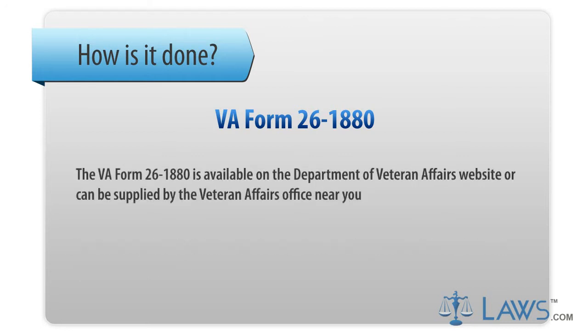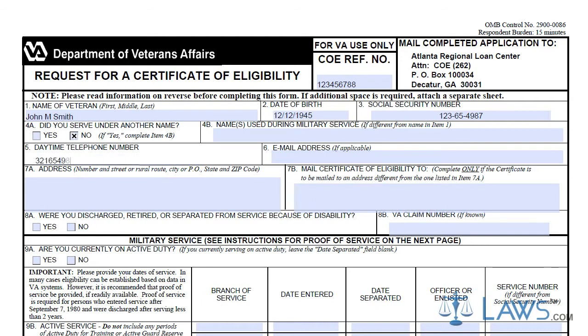The VA Form 26-1880 is available on the Department of Veterans Affairs website or can be supplied by the Veterans Affairs Office near you. Boxes 1 through 8 require your personal identification information: the veteran's name, date of birth, Social Security number, and contact information. You must also provide information about any disability that may have caused your discharge from the military.